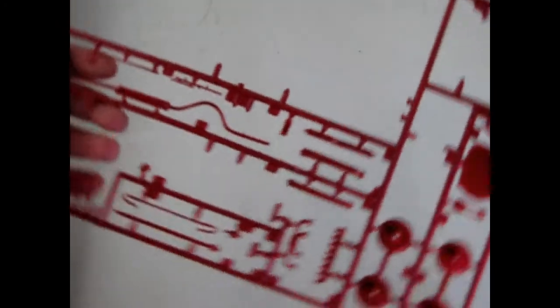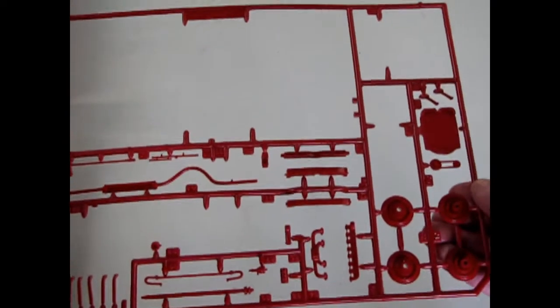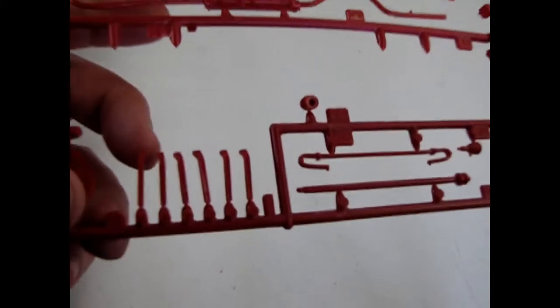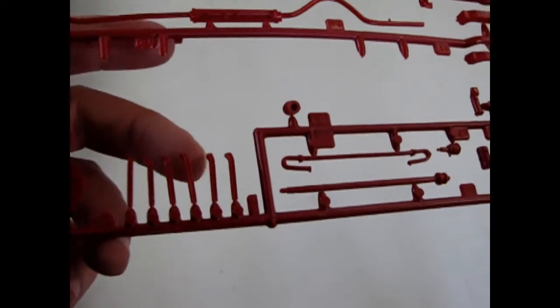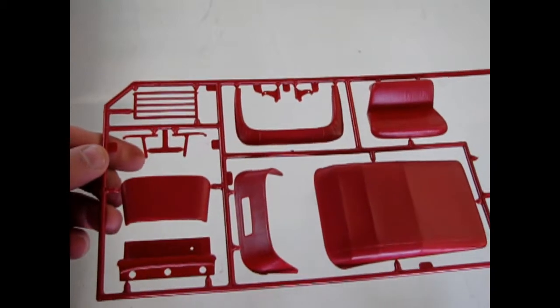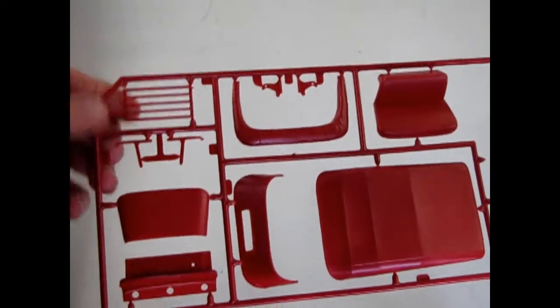Here's another parts tree. I do believe the fenders were in here. And you can see these are little brackets that go on the frame to actually hold the fenders to the frame, which is accurate to the real car. And then there's our interior pieces, the little luggage rack on the back.